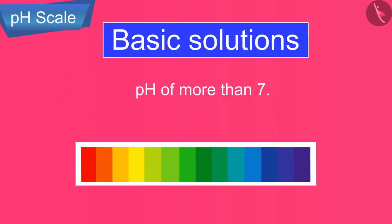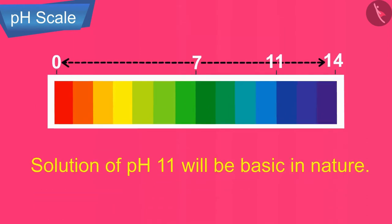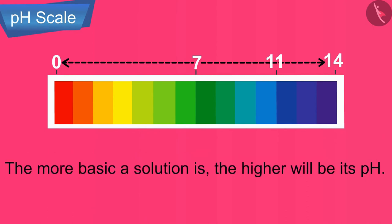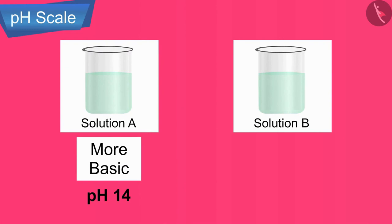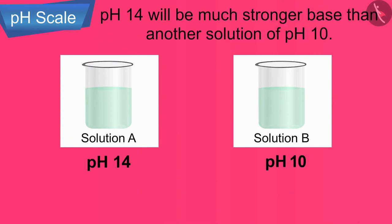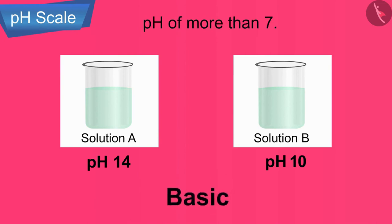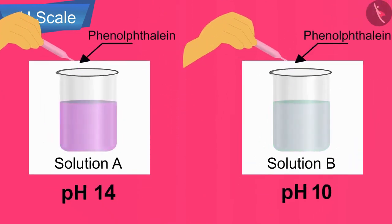Basic solutions have a pH of more than 7 — for example, a solution of pH 11 is basic. The more basic a solution is, the higher will be its pH. A solution of pH 14 is much more basic and a much stronger base than another solution of pH 10. All substances having pH more than 7 are basic in nature and turn red litmus to blue and phenolphthalein indicator pink.